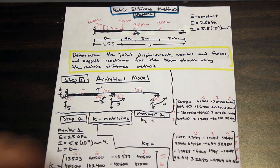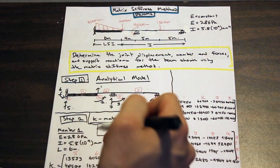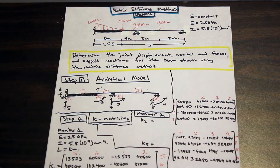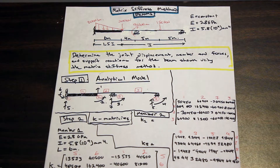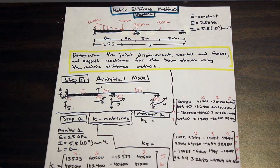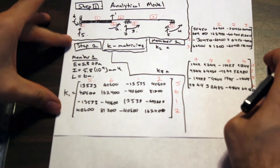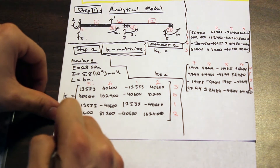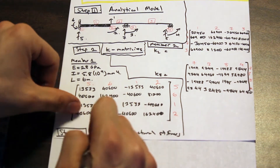Hey guys, welcome back — second part of the video. Fred here from AF Math and Engineering. Last video we solved for the stiffness matrices and did the analytical model of the beam. Now we're moving into assembling the structural stiffness matrix, then the joint load vector, the fixed end moment vector which is vector P. We left off on step two, finding the K matrices, and now we're moving on to step three.